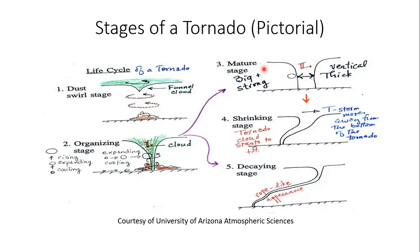In the organizing stage, the funnel is now more visibly in contact with the ground, with more of that counterclockwise rotation. Extremely low pressure is indicated by the red L in the center of the funnel. At the mature stage, we have the widest, strongest tornadic circulation — just a very devastating storm. In the shrinking stage, you see more tilt from cloud base down to the ground, and the thunderstorm moves away from the bottom of the tornado. Finally, in the decaying stage, the big giveaway is that rope-like appearance.